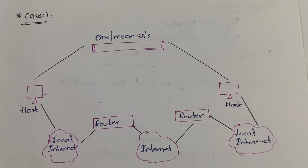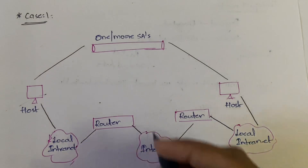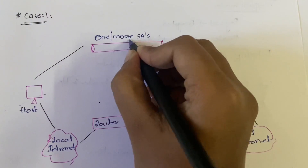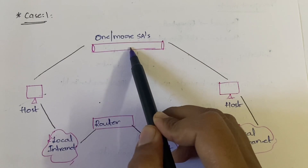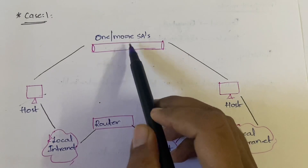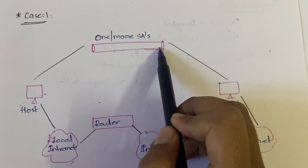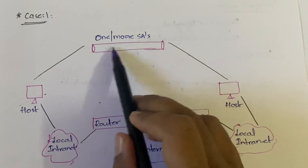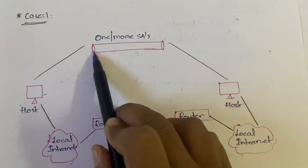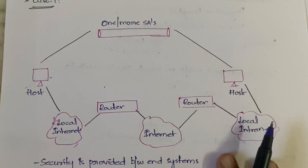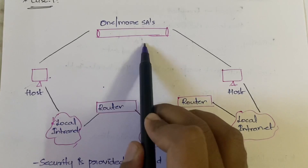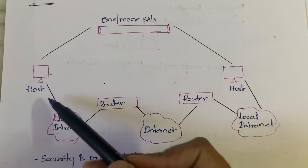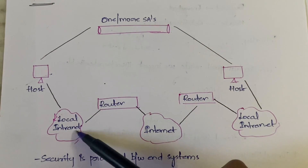Case one is providing security to the end systems. Here you are using one or more security associations — either an individual security association or combining two, three, or four according to your comfort. The security association will be providing security directly to the host.